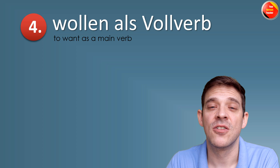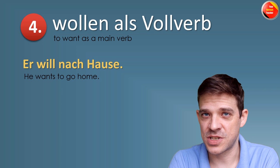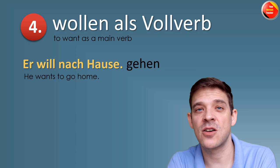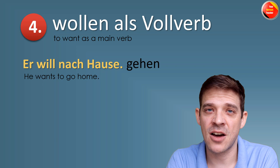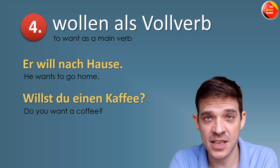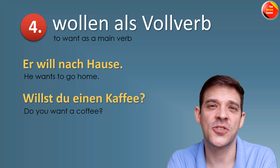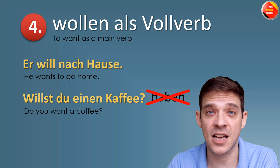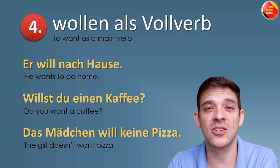There is also another situation where wollen acts as a main verb: Er will nach Hause — he wants to go home. The complete sentence would be 'Er will nach Hause gehen,' but when it's obvious from context, we drop the infinitive. Similarly: Willst du einen Kaffee? — do you want a coffee? (short for 'willst du einen Kaffee haben?'). Oder: Das Mädchen will keine Pizza — the girl doesn't want pizza. Again, we drop 'haben' and the sentence is completely fine.